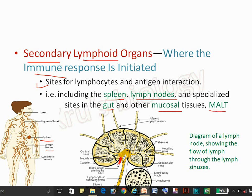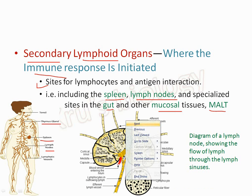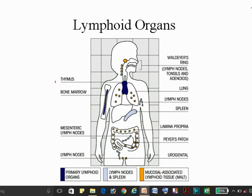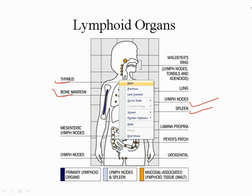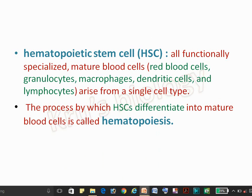The location of each lymphoid organ: the thymus is the primary lymphoid organ. Here you can see the diagram of the lymph node showing the flow of lymph through the lymph sinus. Here you can see the location of the primary lymphoid organs — thymus and bone marrow — and the lymph node, spleen, and various other locations of the lymphoid organs.